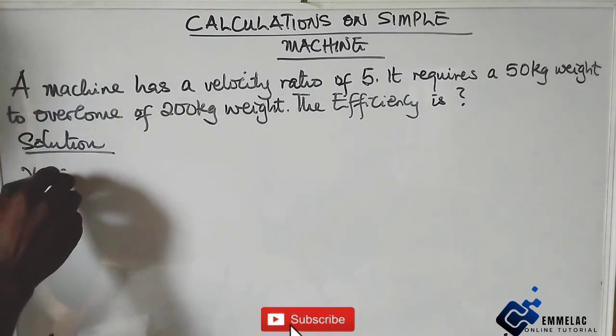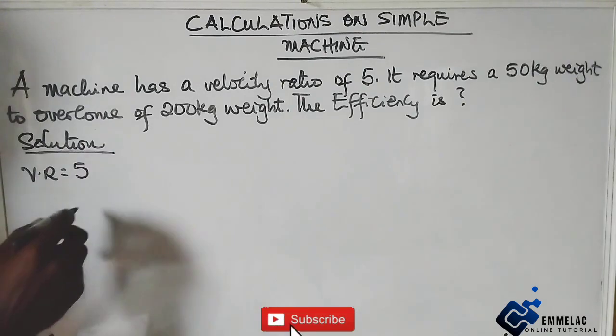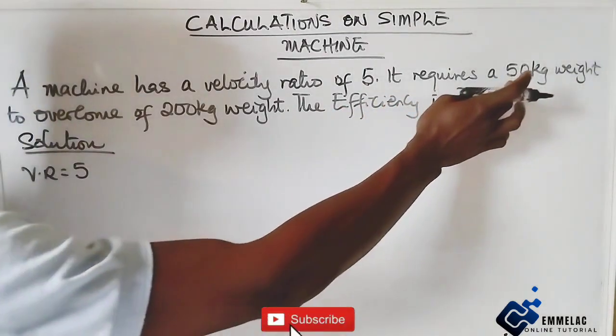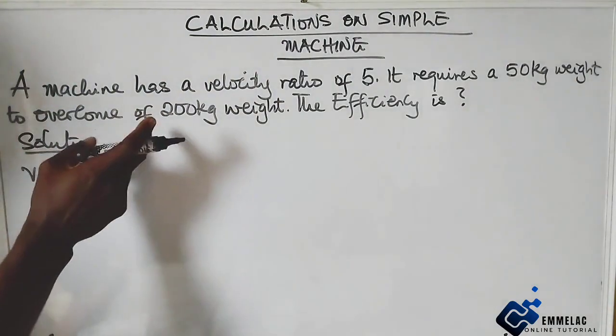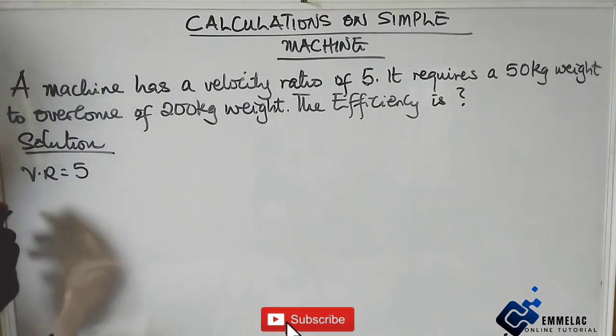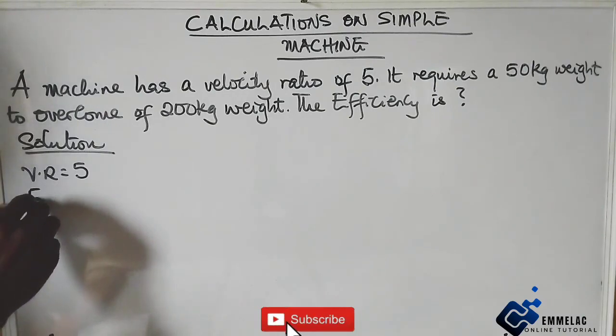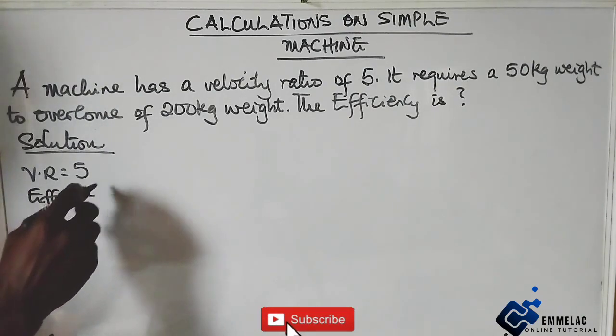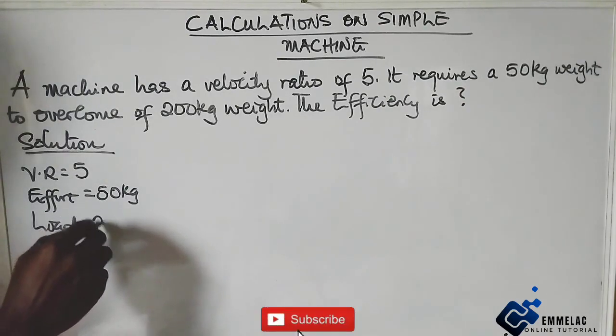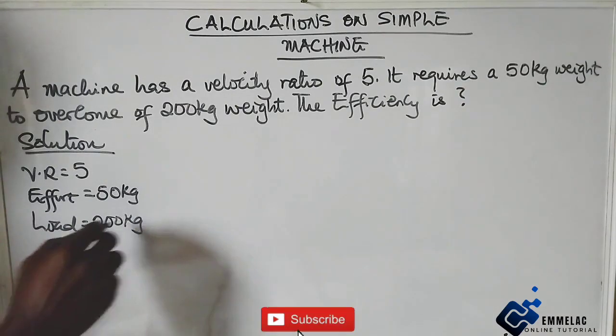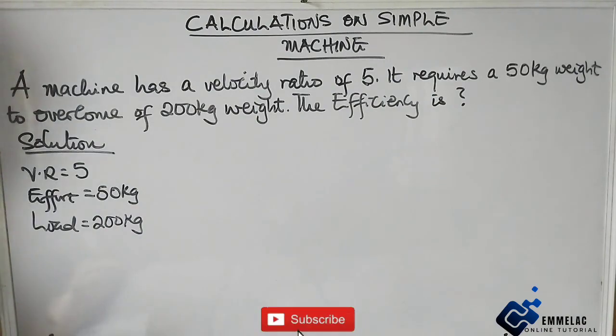We have that the velocity ratio equals 5. It requires a 50 kilogram weight to overcome a force, so here we have that the effort E is 50 kg and the load is 200 kg. We need an effort to overcome a load.